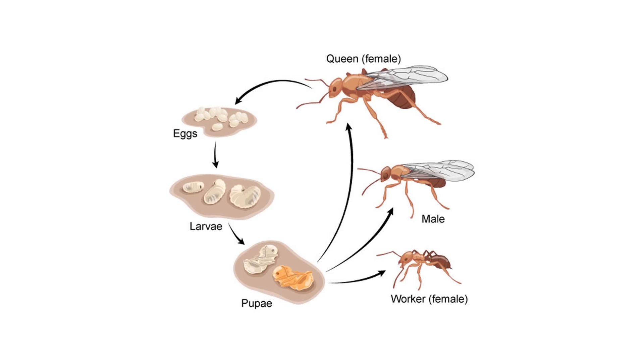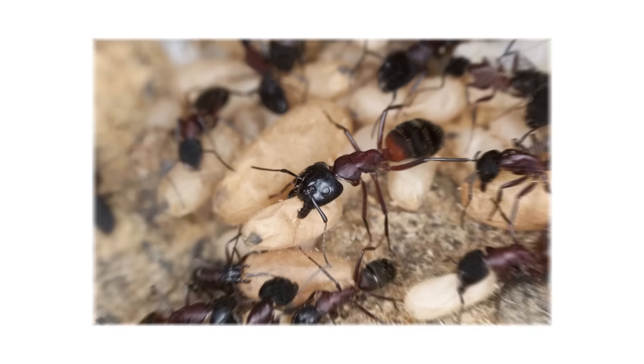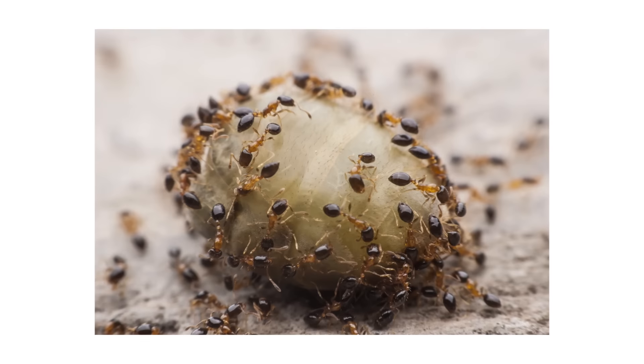There are times during the ant life cycle when baiting is not the most effective method of control. For example, when ants are in a nesting cycle or if they already have a steady and safe supply of food, they won't be very attracted to ant baits.